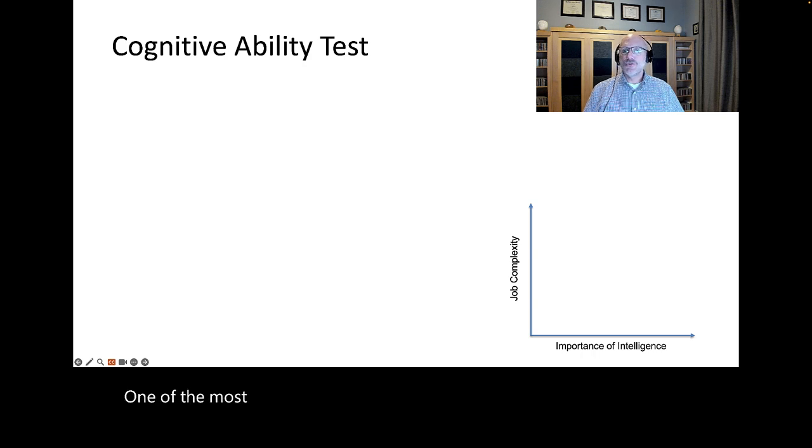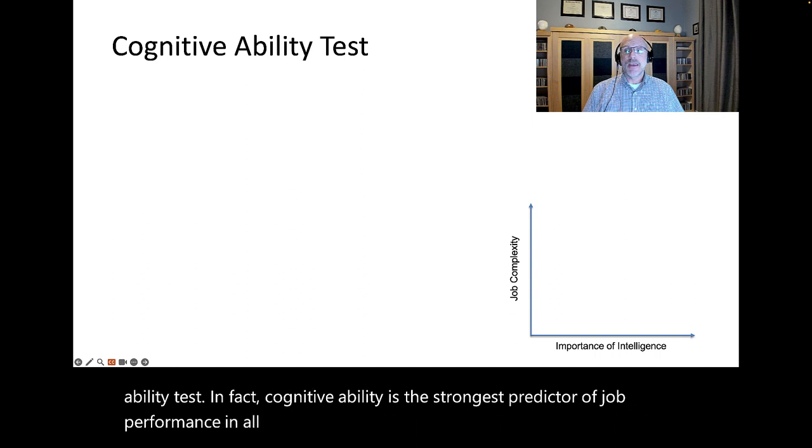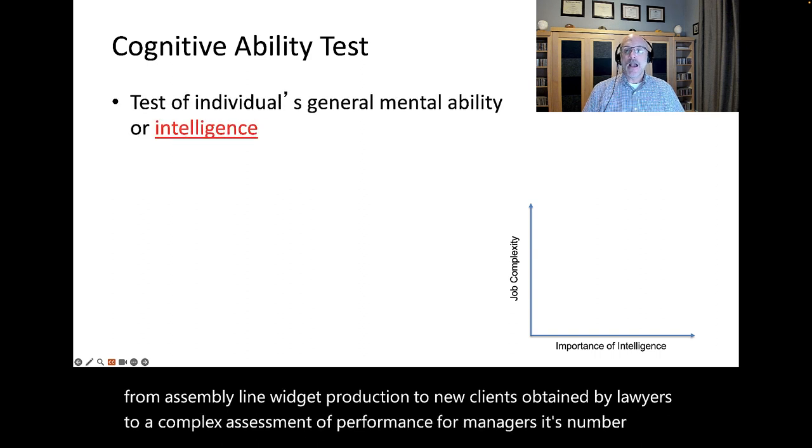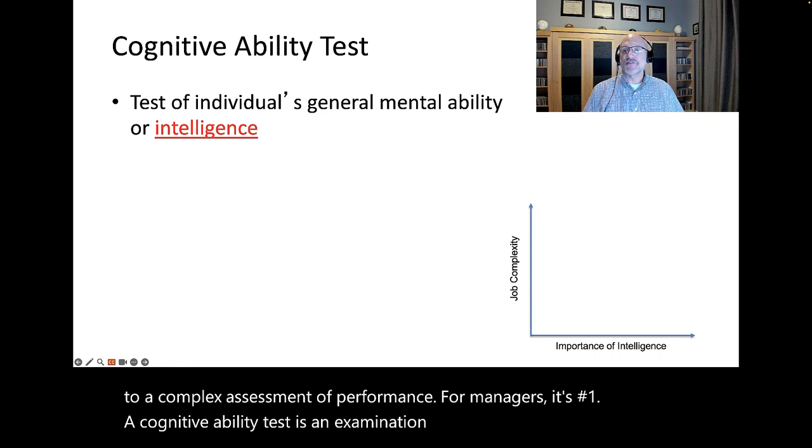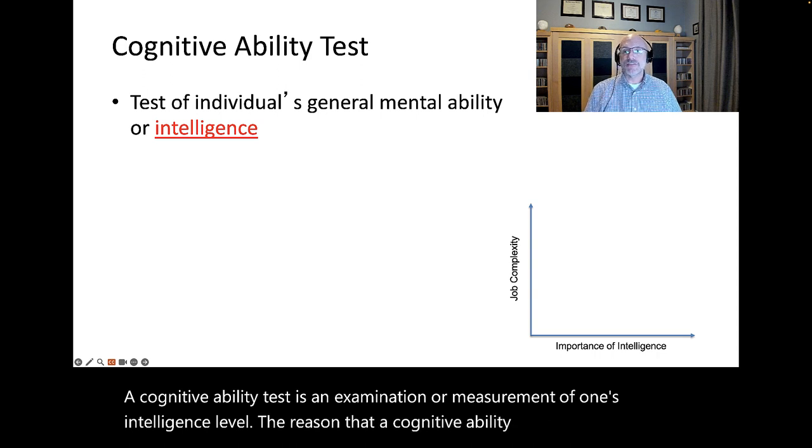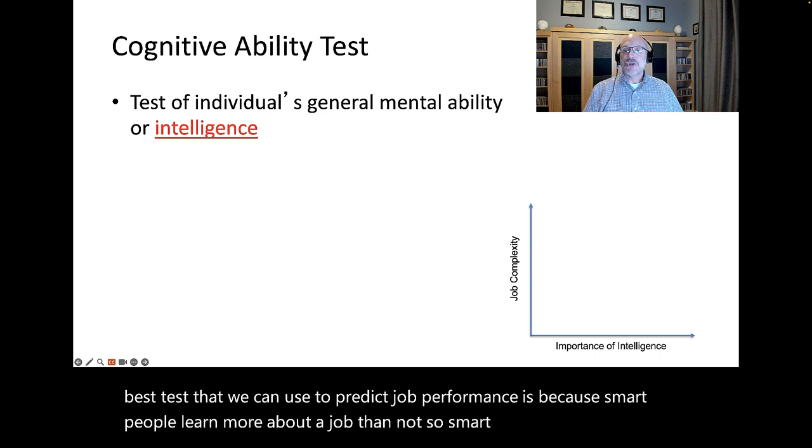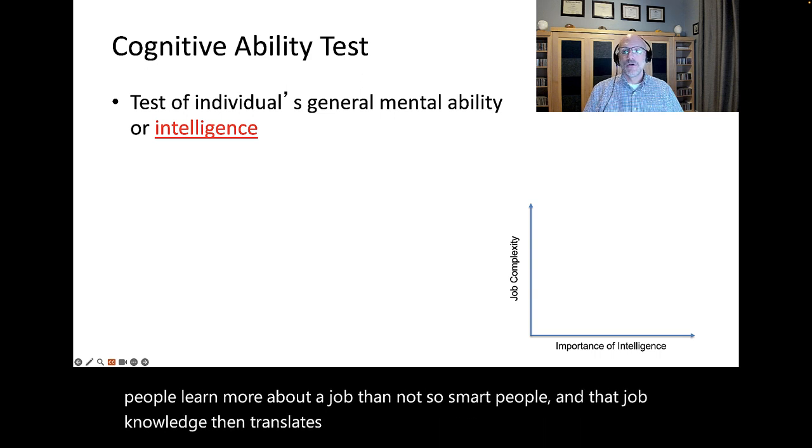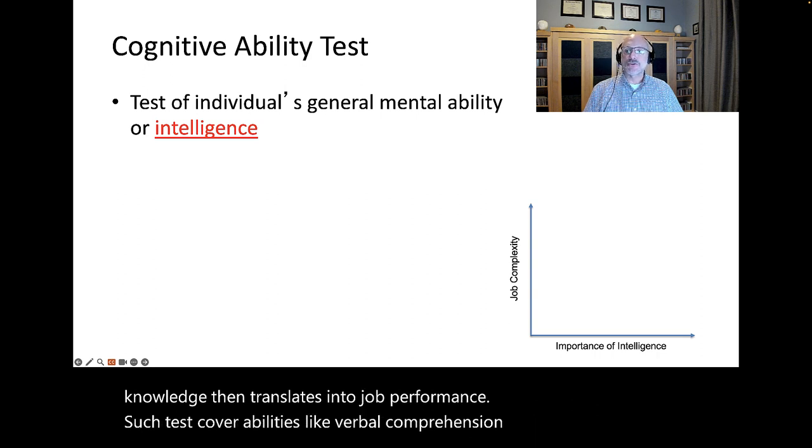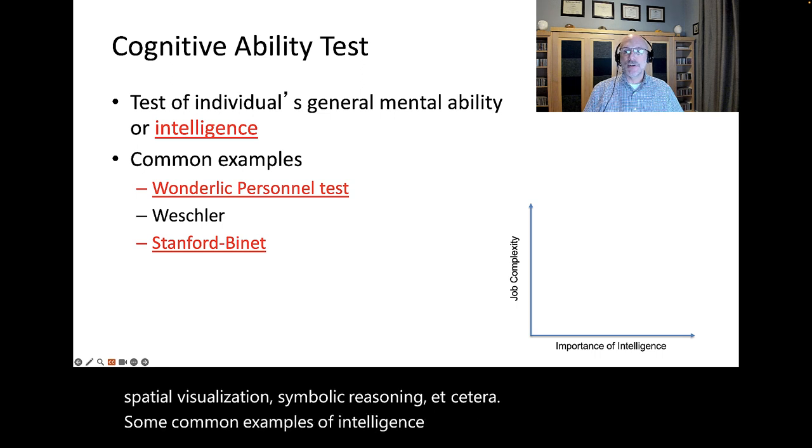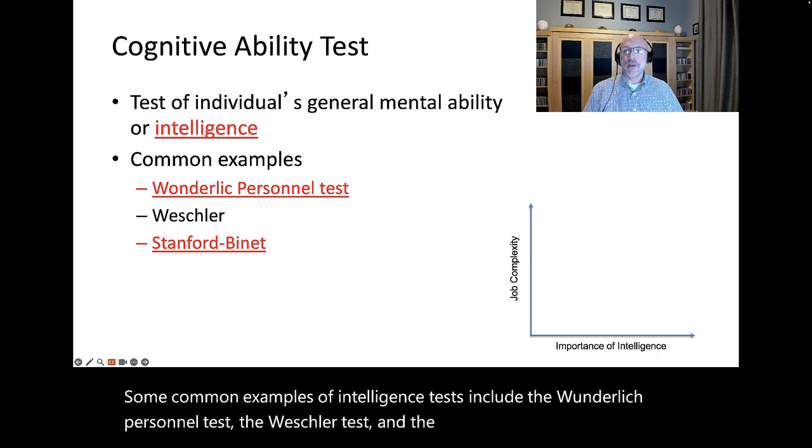One of the most reliable and valid tests used for employment is a cognitive ability test. In fact, cognitive ability is the strongest predictor of job performance in all jobs, using any way of measuring job performance. It's number one. A cognitive ability test is an examination or measurement of one's intelligence level. The reason that a cognitive ability test is the absolute best test is because smart people learn more about a job than not-so-smart people, and that job knowledge then translates into job performance. Such tests cover abilities like verbal comprehension, numerical ability, spatial visualization, symbolic reasoning.